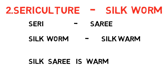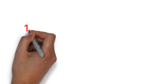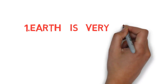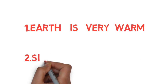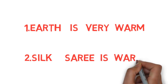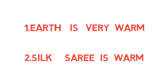My advice is to memorize these two sentences so that you can easily remember both branches of agriculture without any confusion. First sentence: 'Earth is very warm' — here 'very' means vermiculture, so vermiculture is related to earthworm. Second sentence: 'Silk sari is warm' — here 'sari' means sericulture, so sericulture is related to silkworm.